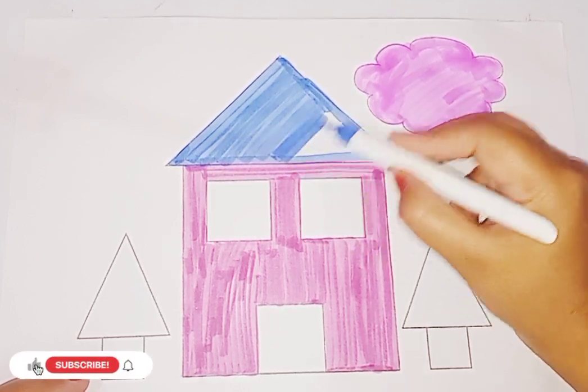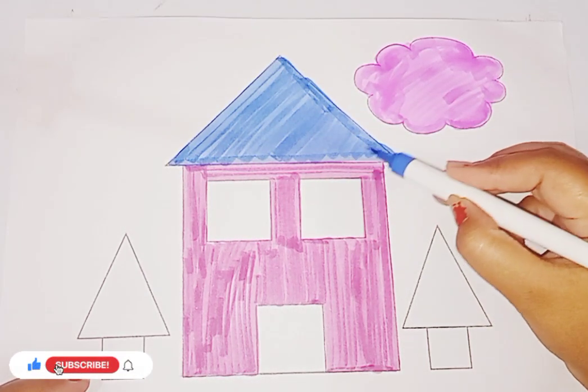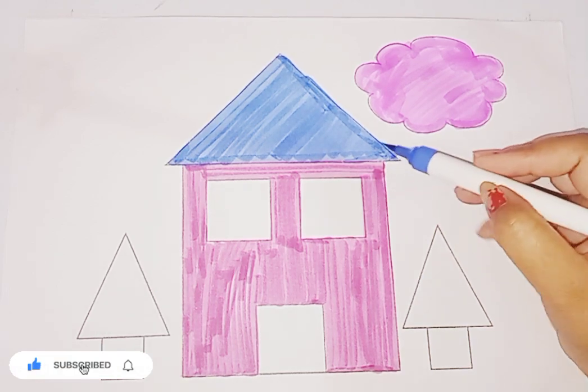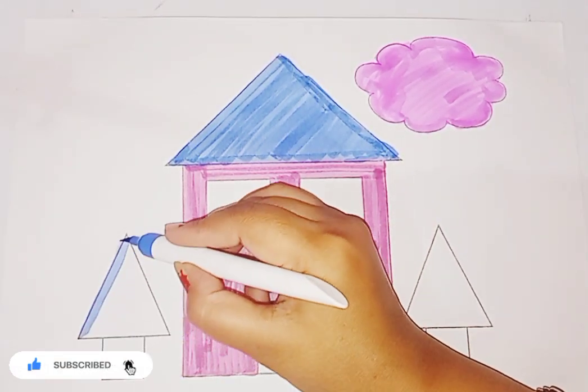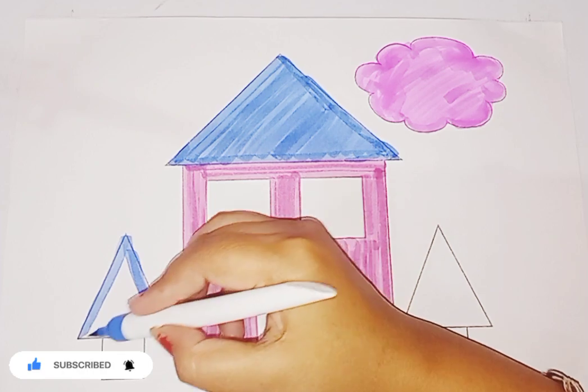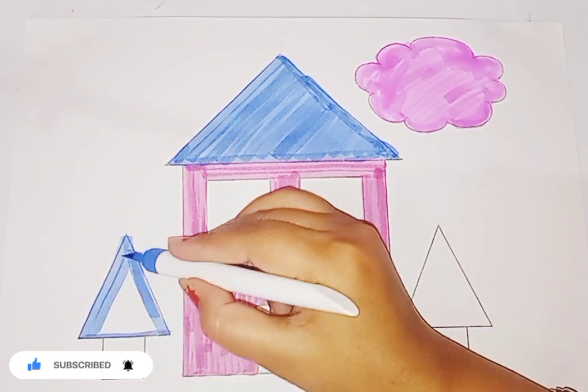This is the roof of shape house. Here are two more triangles and these are trees. Shape is triangle, so we use blue color in all the triangles.